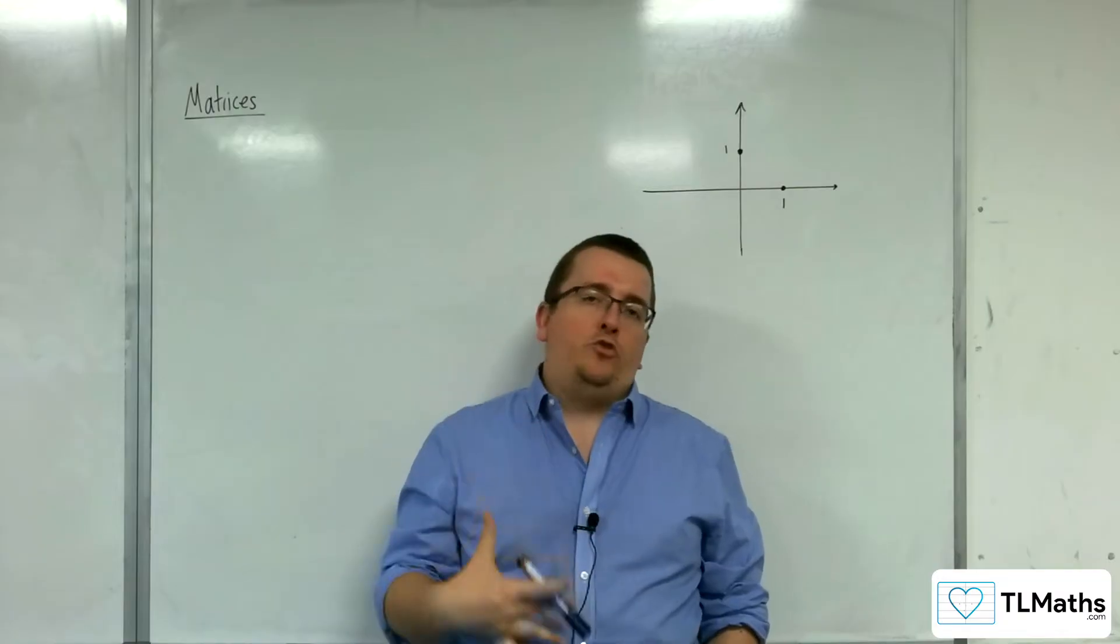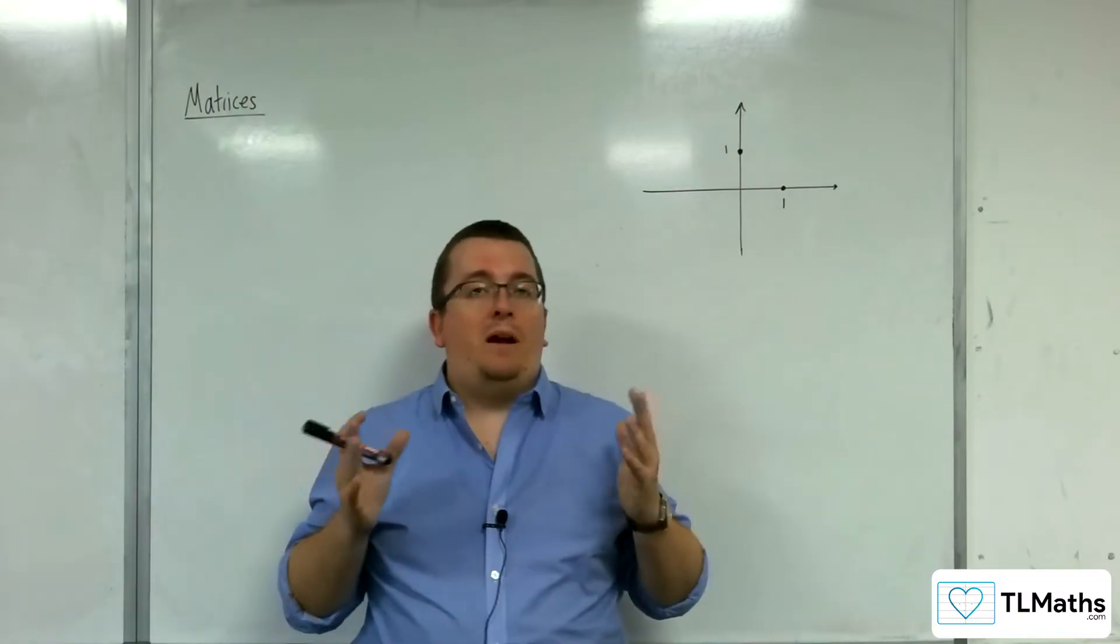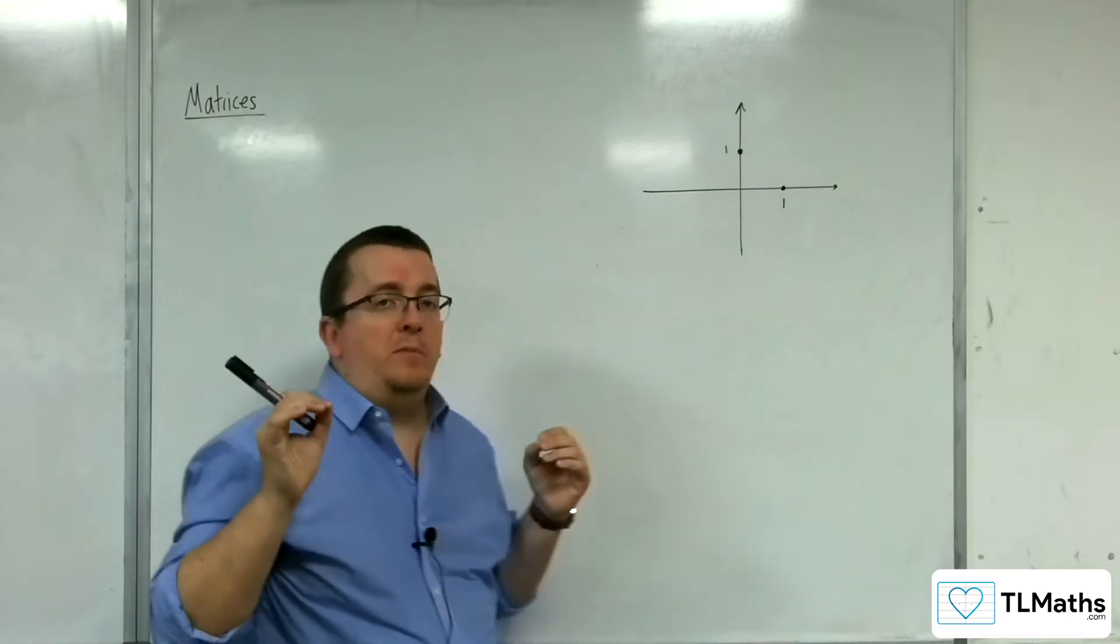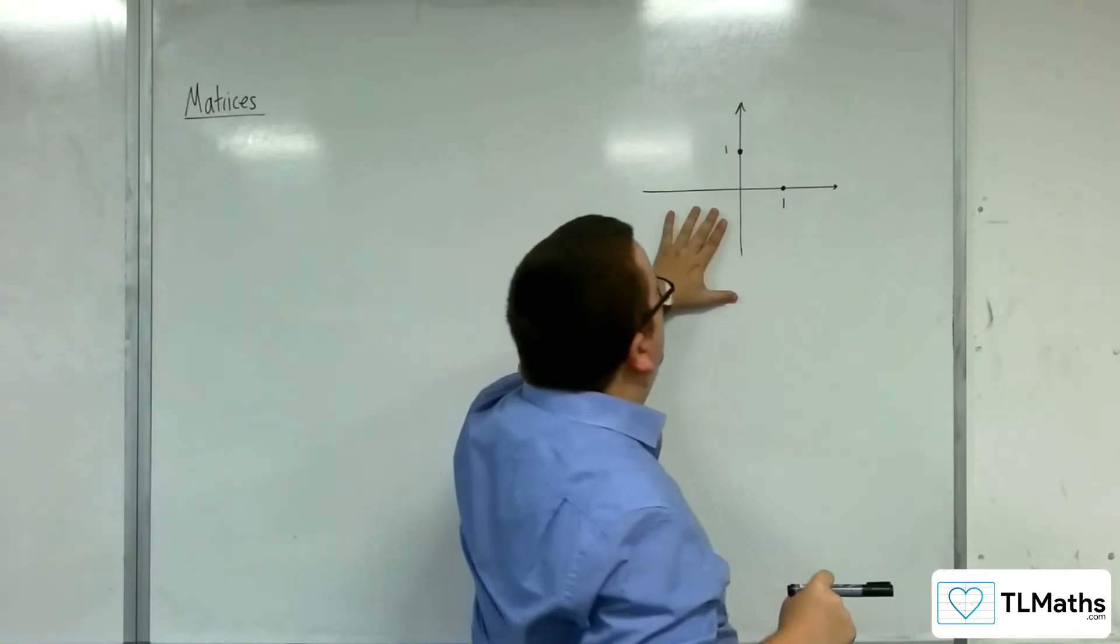Before we look at a matrix that will allow you to rotate by any angle about the origin, we're going to look at some special ones first. So we're going to start off with this diagram here.